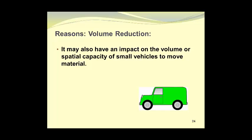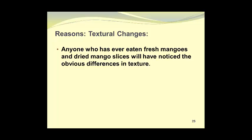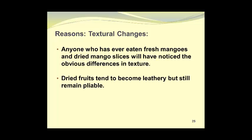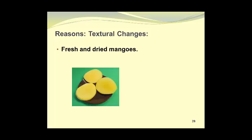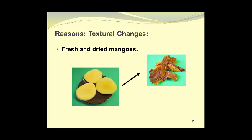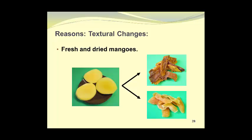Volume reduction may also have an impact on the volume or spatial capacity of small vehicles to move the material. Anyone who has ever eaten fresh mangoes and dried mango slices will have noticed the obvious differences in texture. Dried fruits tend to become leathery but still remain pliable, and the texture of dried fruits has often been described as being chewy. Here we see some fresh mango slices, and we can compare them to slices of mango which have been dried in a hot air dryer. Note the difference in color and the difference in shape and size. In another drying mechanism, using osmotic dehydration, which we will describe in a future video, we can obtain product that looks much softer and appears to be much more palatable.